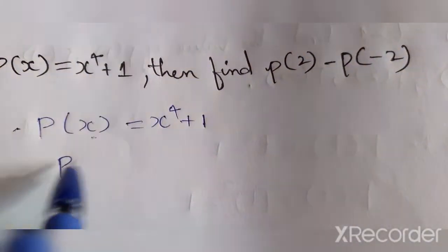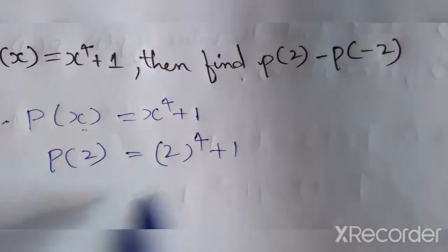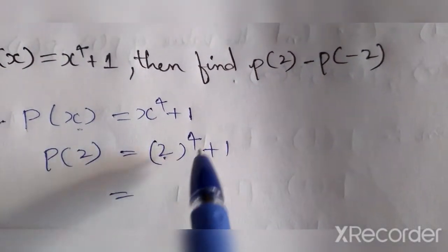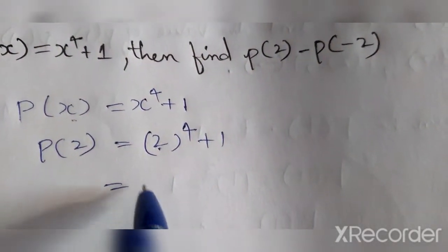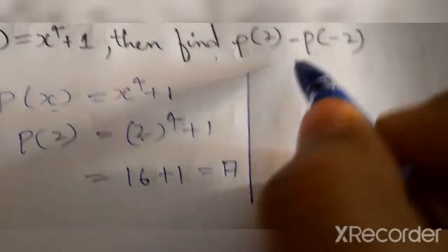You should write 2. p(2) equals 2^4 plus 1. If we multiply 2 four times, it will become 16, so 16 plus 1 equals 17.